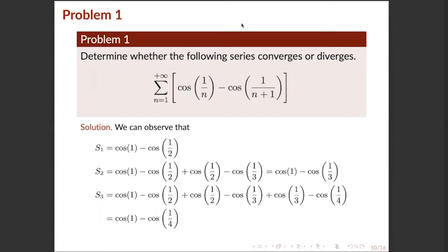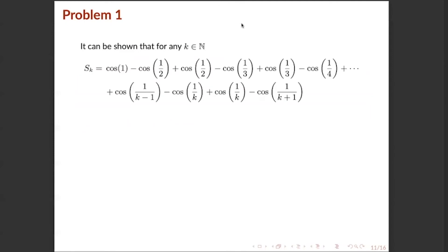For s_3, we have cos(1) minus cos(1/2) plus cos(1/2) minus cos(1/3) plus cos(1/3) minus cos(1/4). We can cancel both cos(1/2) and cos(1/3), leaving cos(1) minus cos(1/4). We can generalize this: the k-th partial sum telescopes so that all intermediate terms cancel, leaving cos(1) minus cos(1/(k+1)).